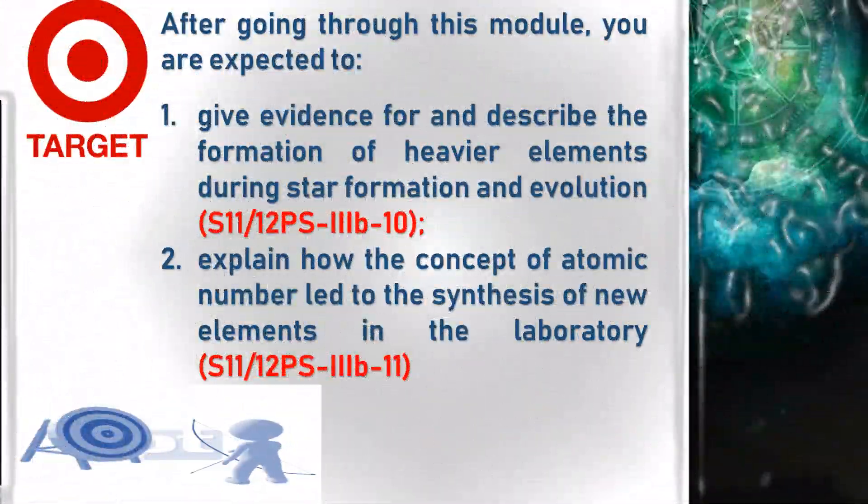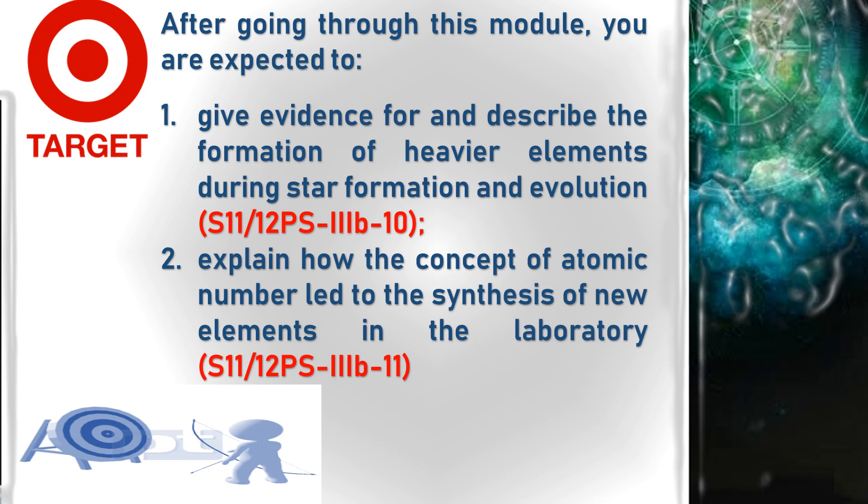This module will provide you with information and activities that will help you understand better the formation of heavier elements during star formation and evolution and how the concept of atomic number led to the synthesis of new elements in the laboratory. After going through this module, you are expected to: first, give evidence for and describe the formation of heavier elements during star formation and evolution. Second, explain how the concept of atomic number led to the synthesis of new elements in the laboratory.